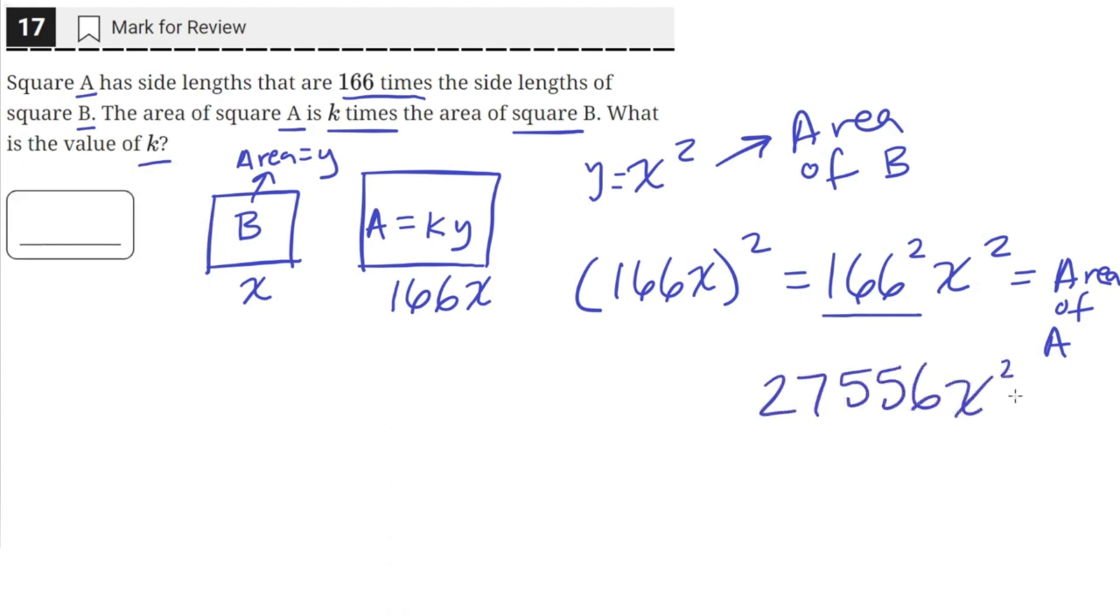So this is the area of A. And we can see that this coefficient here is the value of k, since it's being multiplied with the area of B.